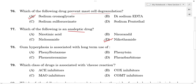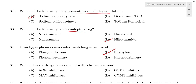Question number 78: Gum hyperplasia is associated with long-term use of which drug? Gum hyperplasia is a side effect of phenytoin. Other phenytoin side effects include fetal hydantoin syndrome in pregnancy, hyperglycemia due to insulin receptor inhibition, osteomalacia, megaloblastic anemia, and hirsutism.